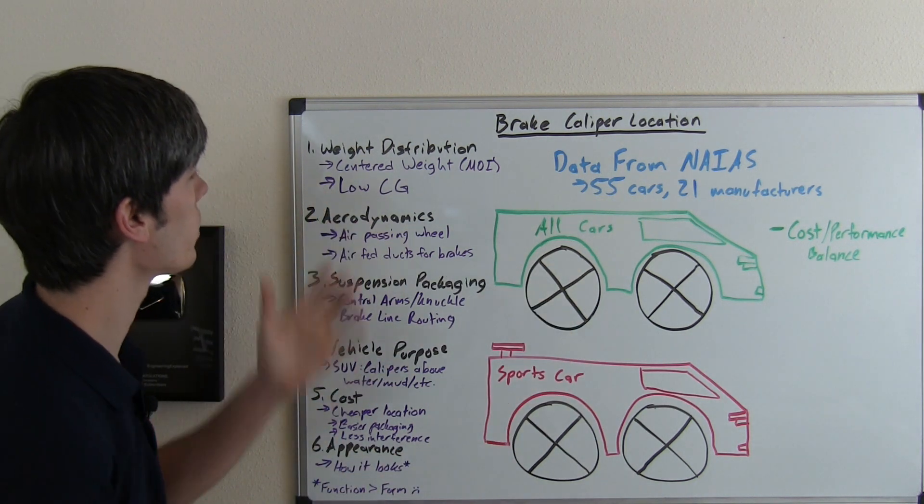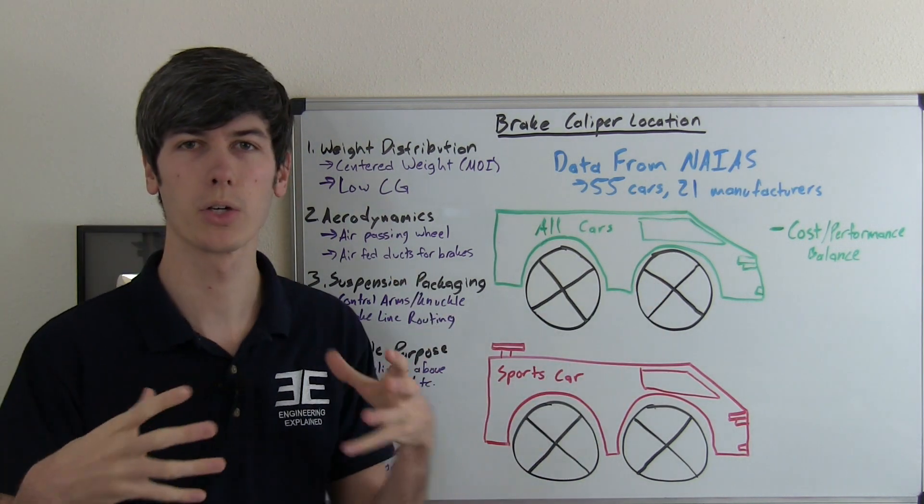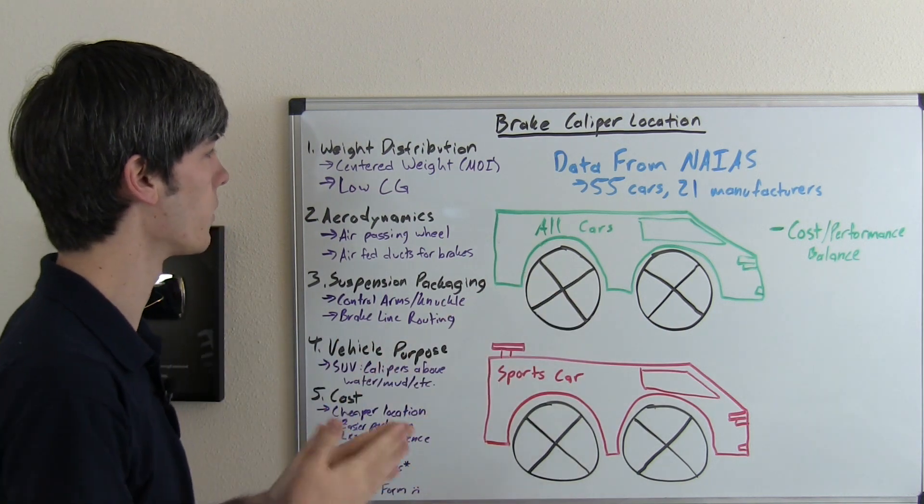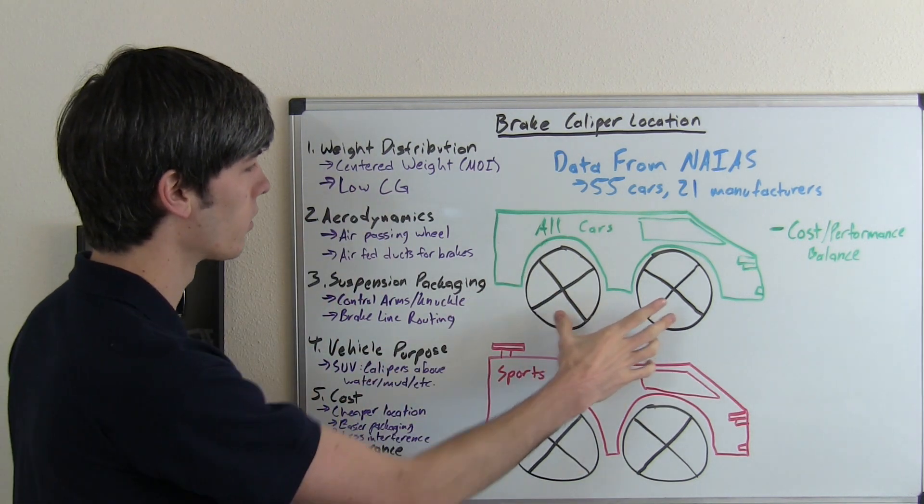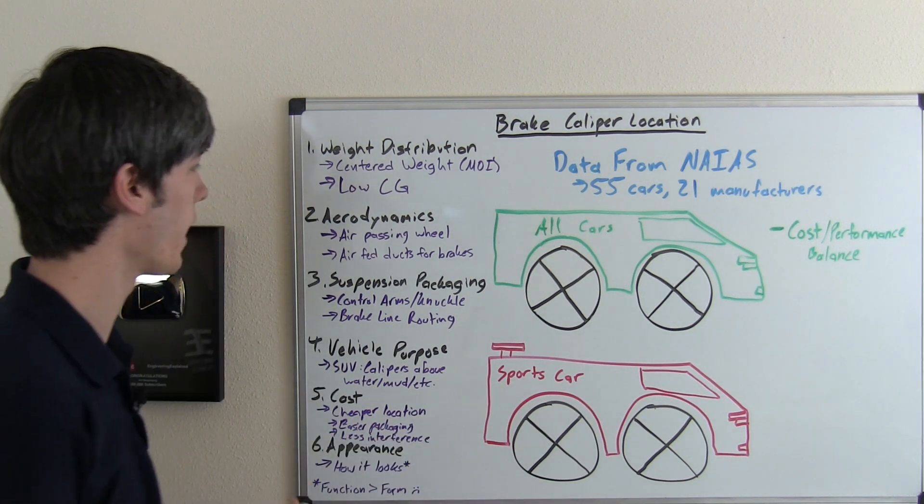So from a weight distribution perspective you may want to put the brake calipers toward the center to keep the moment of inertia of the vehicle lower in order for it to be a little bit more agile. You also may want to place it down low to keep the center of gravity of the vehicle down low. So weight distribution could play a role in that.